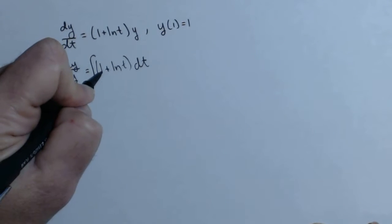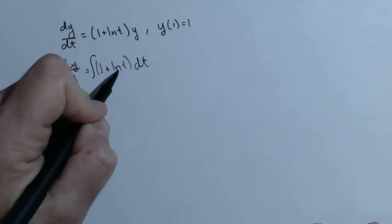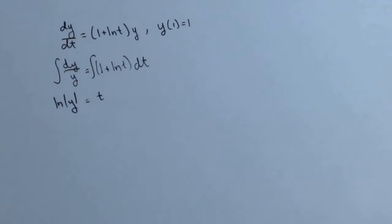Over here, antiderivative of 1 is just t, which is fine. And then we have the antiderivative of ln of t. So just as a reminder, let's look at the antiderivative of ln of t in case you don't remember how to find it.